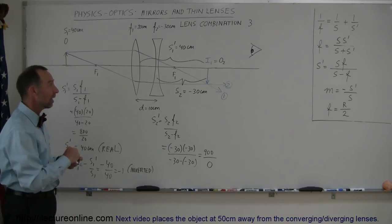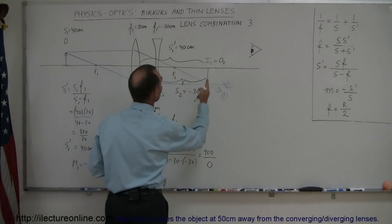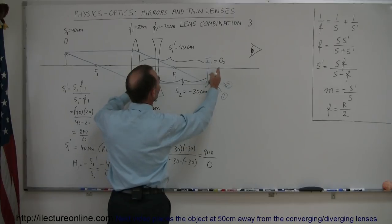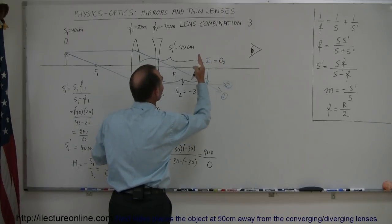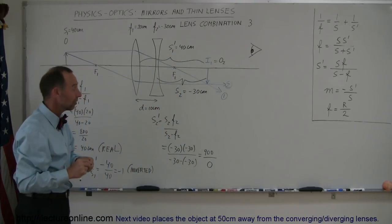That means the object or the image of the second lens is at infinity. Let's see here... oh that makes a lot of sense because it turns out that the first image, which now became the second object, is exactly located at the focal point of the second lens and it's a diverging lens.